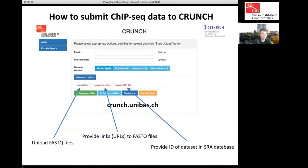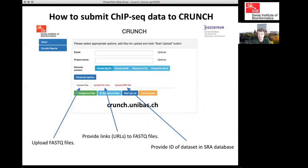There are three ways in which you can provide your data. Either you can upload your FASTQ files directly using this tab. If you use another tab, you can provide links to the URLs where your files are stored — you just tell the server at which web addresses your data files are, and then CRUNCH will get the data itself.